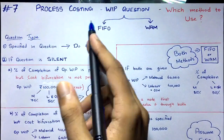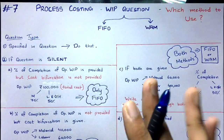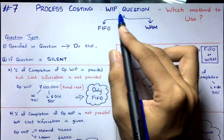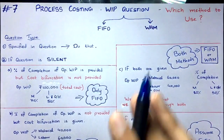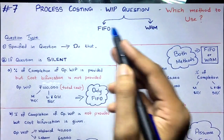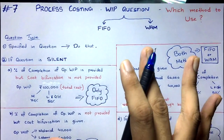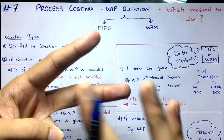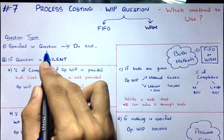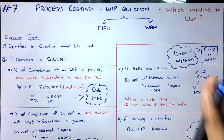Hi everyone, welcome back to the seventh video on the Process Costing chapter. In this video we are going to understand how to decide which method to use in a WIP question — just by looking at the question. Do we use the FIFO method or the WAM method? There are two different types of questions. The first type is where the question specifically tells you which method to use — FIFO or WAM — and you simply follow that.